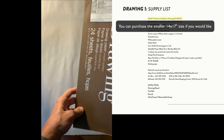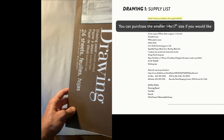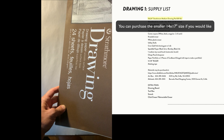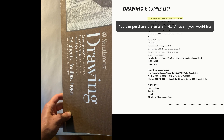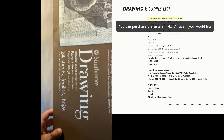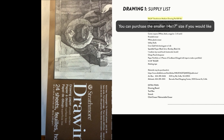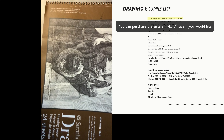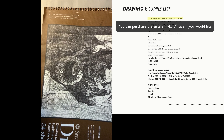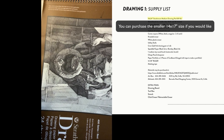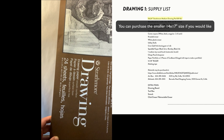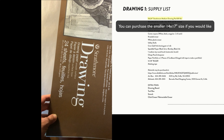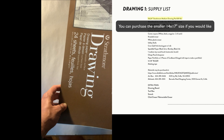This is the drawing pad I want you to get. It's hard to see it in full because it's so large — it's spiral bound and 80-pound paper, which means we can apply ink to it.